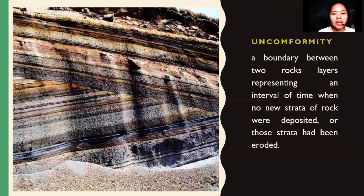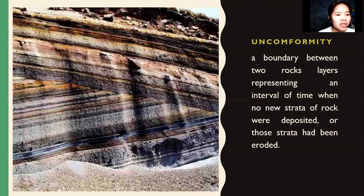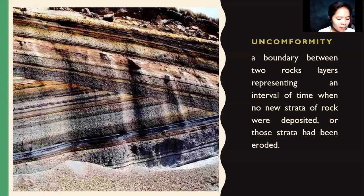Unconformity is a boundary between two rock layers representing an interval of missing time. Unconformities represent the missing part of the rock record caused by uplift, weathering, erosion, and subsidence. As the picture explains, new strata of rock were deposited where previous strata had been eroded.